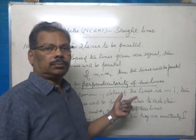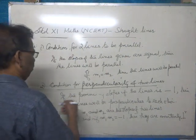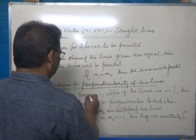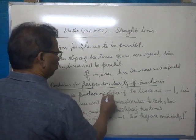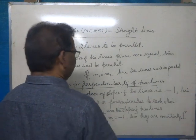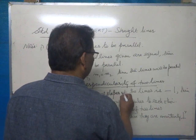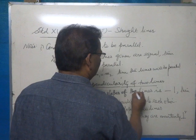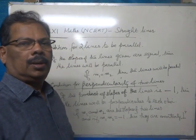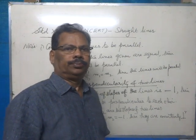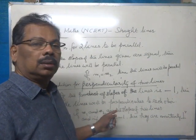Condition for perpendicularity of two lines: if the product of the slopes of the lines is negative one, then the lines will be mutually perpendicular. Let the slopes be m1 and m2, then if m1 times m2 is equal to negative one, the lines will be mutually perpendicular.